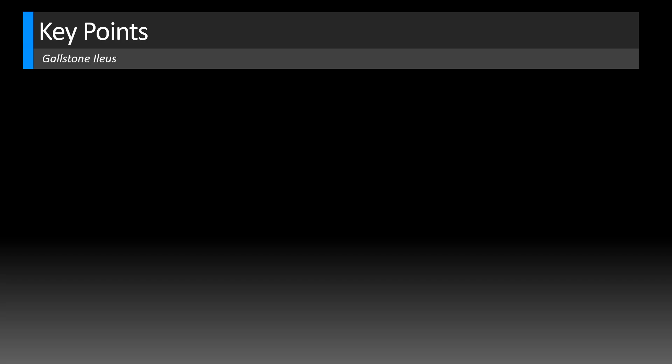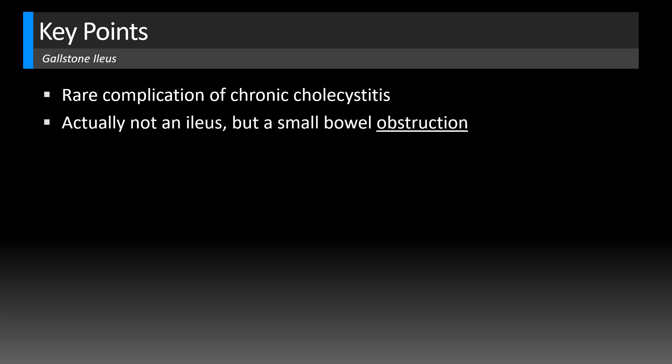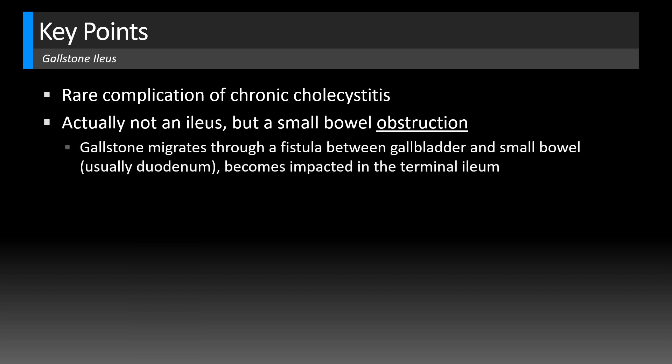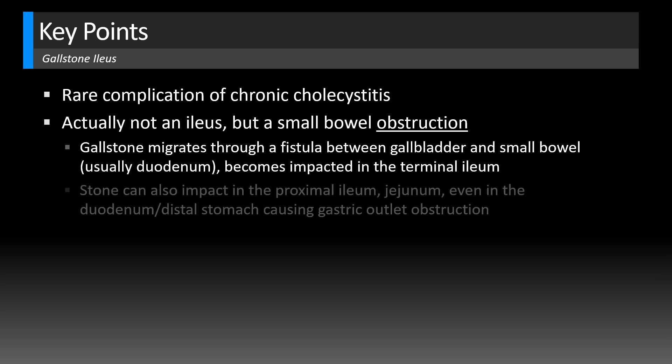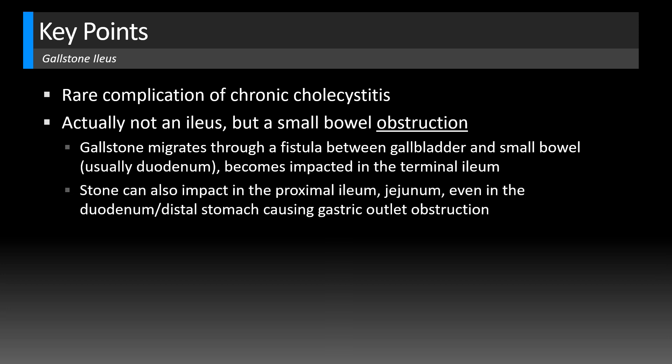Let's go over a few key points for gallstone ileus. This is a rare complication of chronic cholecystitis. The name is actually somewhat of a misnomer since it's not actually an ileus, but a small bowel obstruction — because the gallstone migrates through a fistula between the gallbladder and small bowel, usually at the level of the duodenum, and then becomes impacted in the terminal ileum classically because the lumen is small. This tends to only occur with large gallstones, around two to three centimeters in size. The stone can also impact in the proximal ileum, mid to distal ileum, jejunum, even the duodenum or distal stomach, where it causes a gastric outlet obstruction.